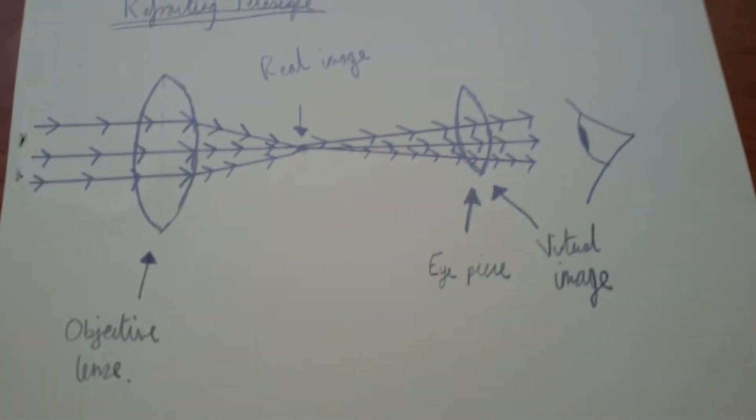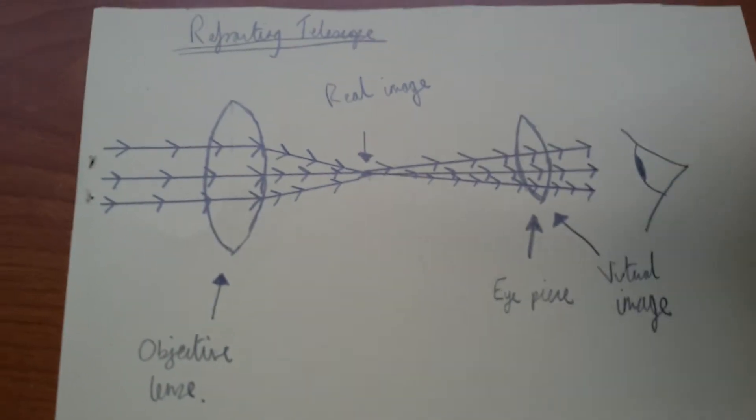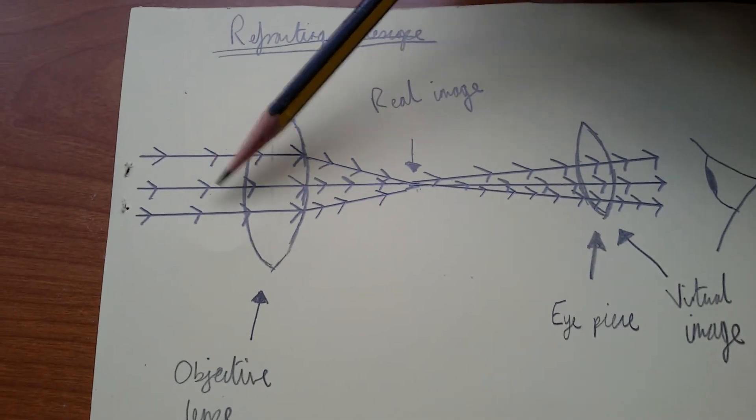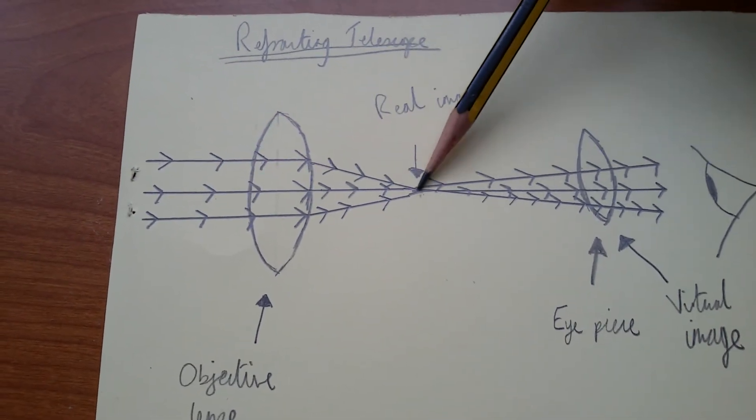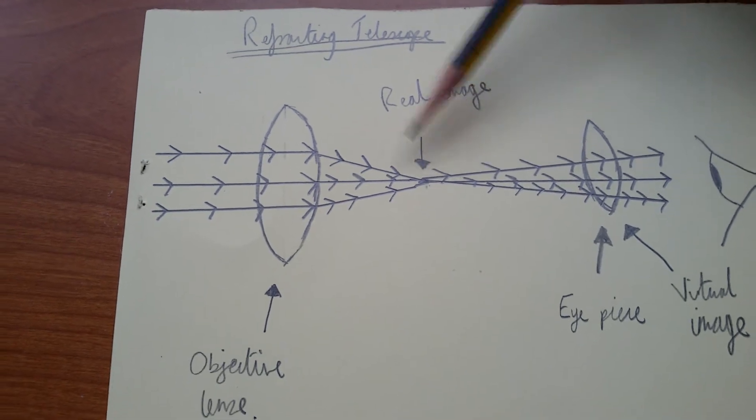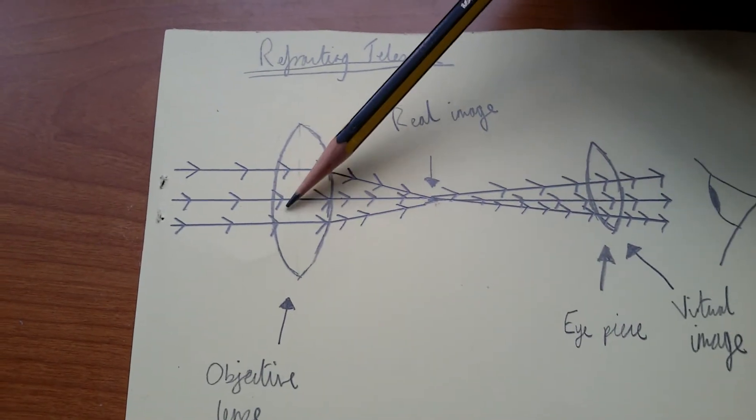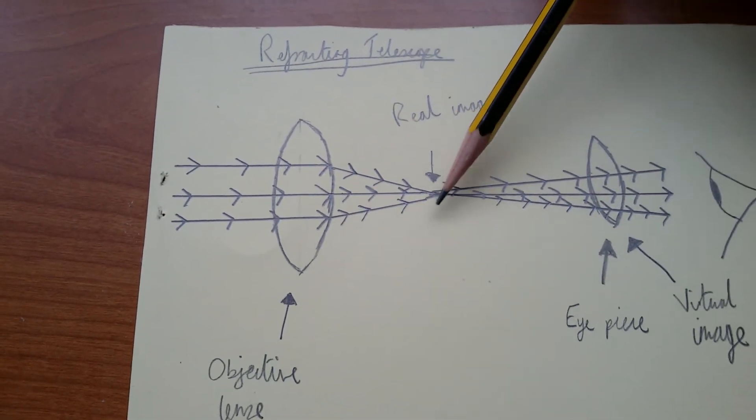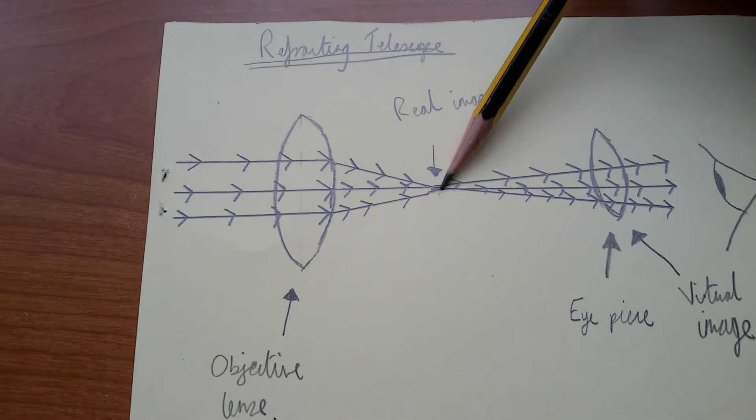So let me go through this. As you can see, the light rays are coming in parallel and meeting here. A real image is being formed here through the objective lens. These are converging lenses. Both of these are converging lenses. So a real image is being formed around here.